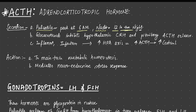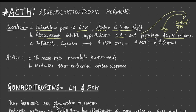Glucocorticoids inhibit hypothalamic CRH — cortisol releasing hormone — and pituitary ACTH release. This is a negative feedback because ACTH increases the production of cortisol from the adrenal gland, and cortisol will inhibit it. So this is a negative feedback loop. It will not only inhibit ACTH, but also inhibit corticotropin releasing hormone from the hypothalamus. So glucocorticoids, whether endogenous or exogenous, will always inhibit the release of CRH and ACTH from hypothalamus and pituitary respectively.